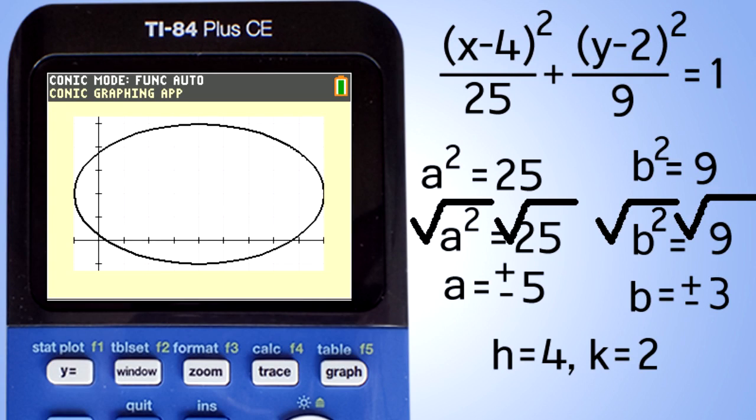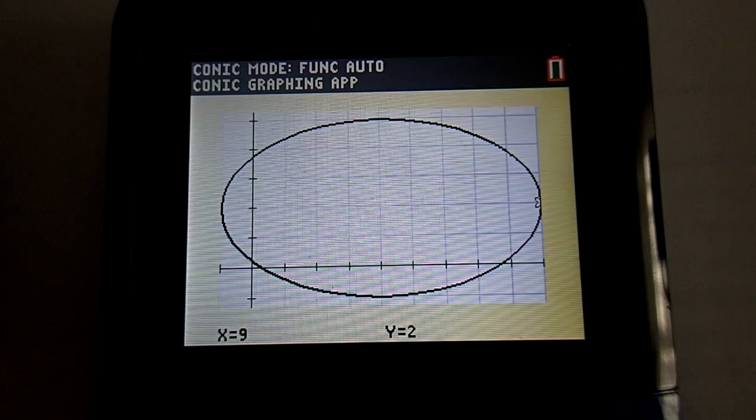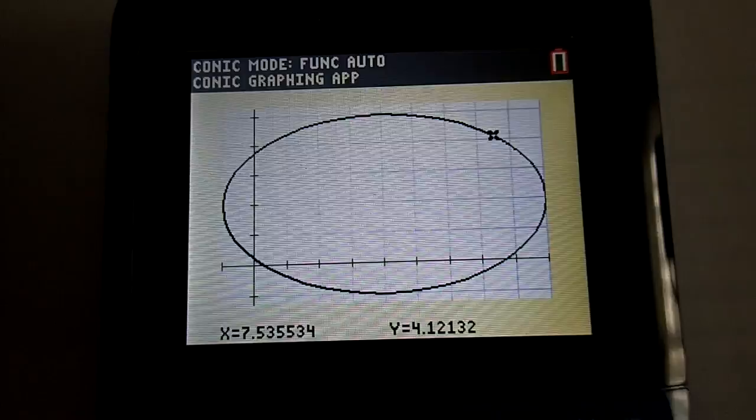Unfortunately, the numbers of the graph are not labeled. But you can press this trace button here and then use the right arrow button to trace along the ellipse and display the coordinates of the ellipse.